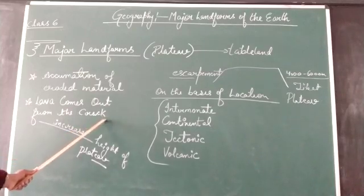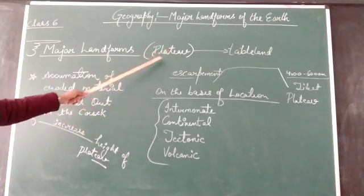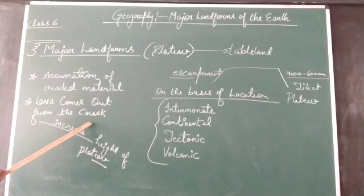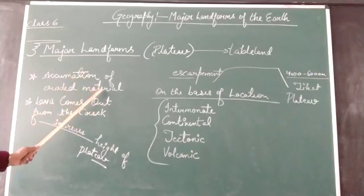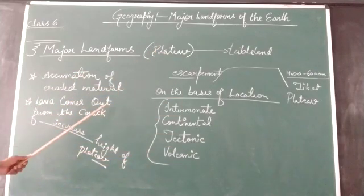The Deccan Plateau is an example of this volcanic type of plateau. The other way, accumulation of eroded material, is also a way through which plateaus are formed on the Earth's surface.